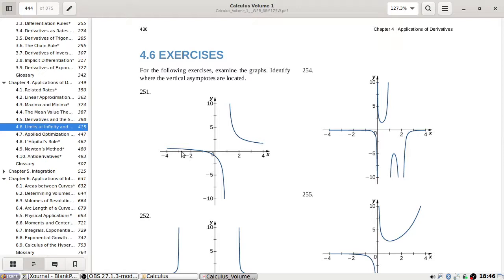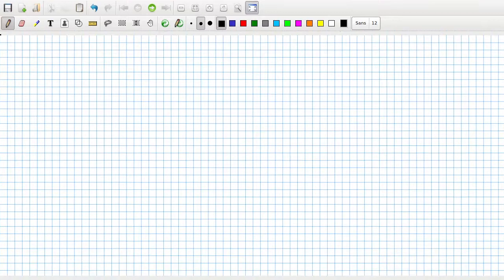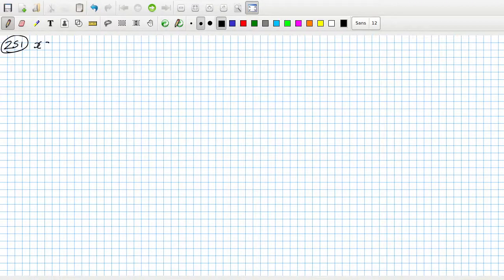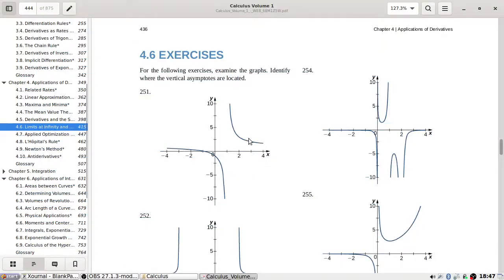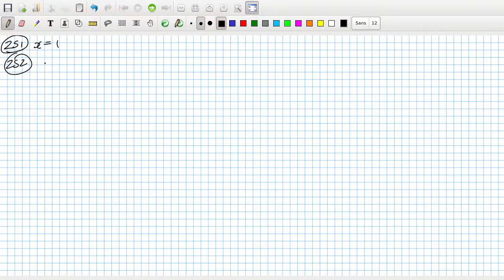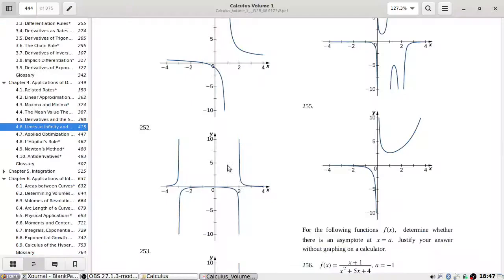Oh wow, that's pretty easy to get us started with. I think 251 looks like asymptote at one. 252, plus or minus? No, at two and at minus three.